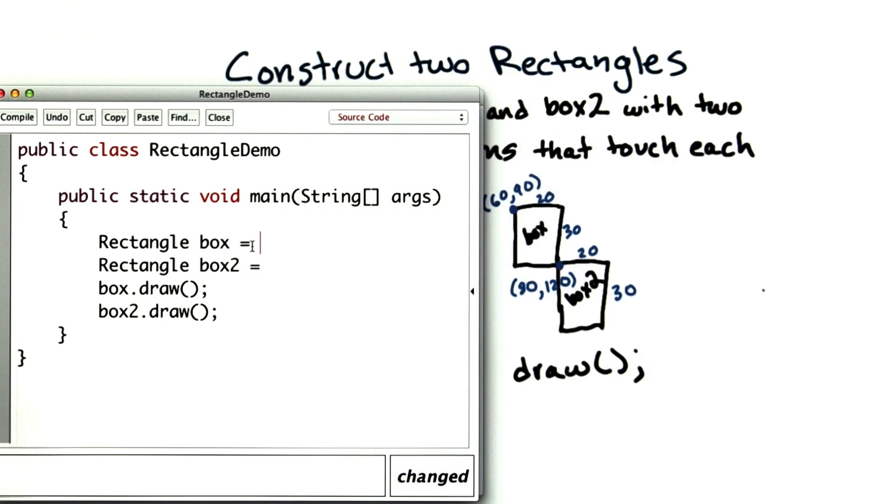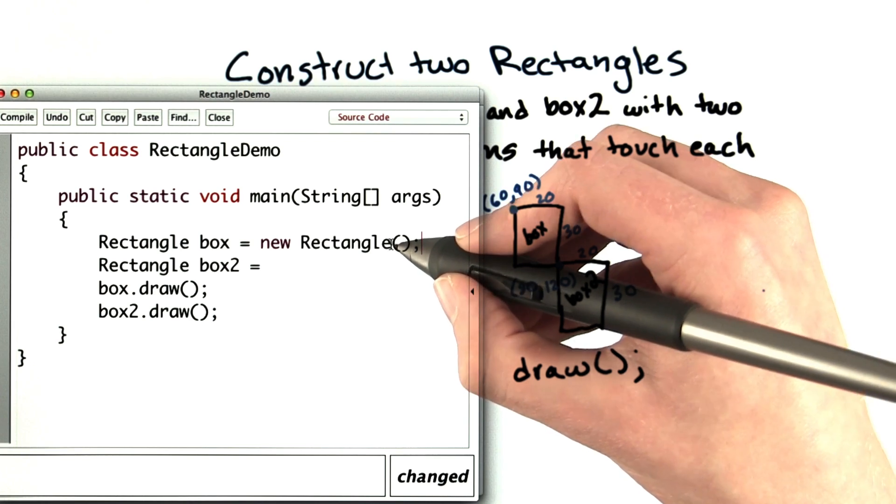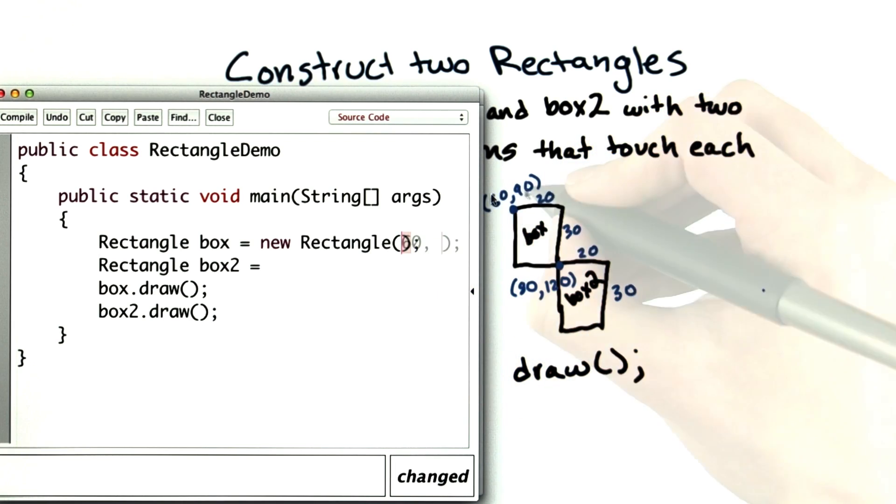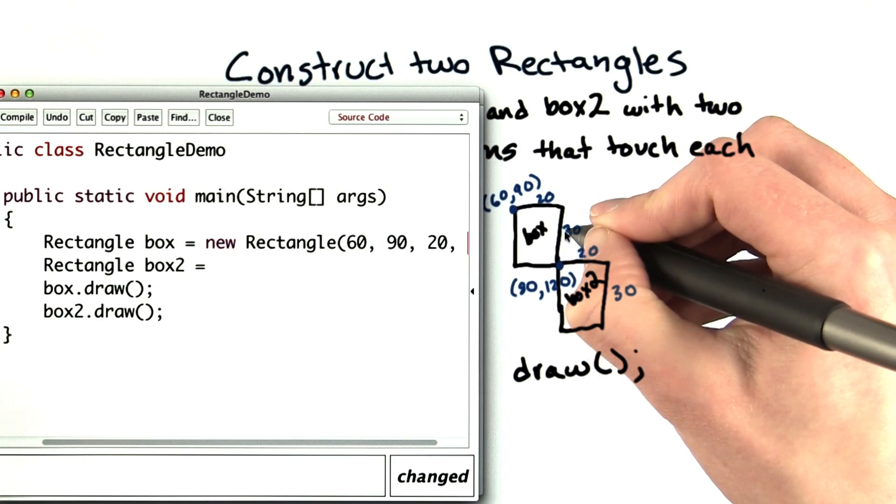We'll make box a new rectangle. Now this constructor needs to take an x, a y, width, and a height. X we know is 60, y is 90, the width is 20, and the height is 30.